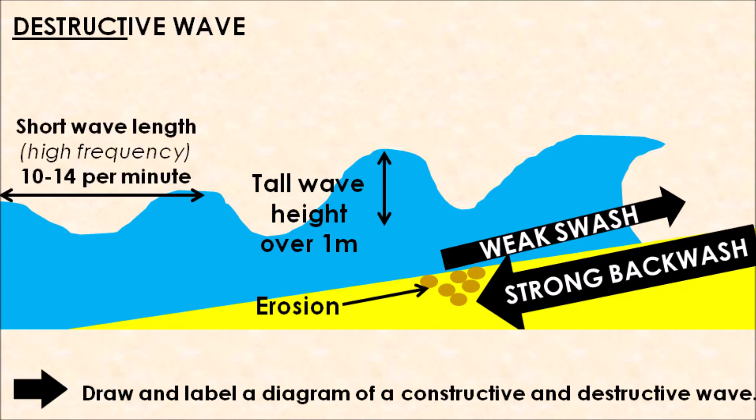Destructive waves have shorter wavelengths and higher frequency as well. When destructive waves approach our coastline, we can have 10 to 14 occurring per minute.